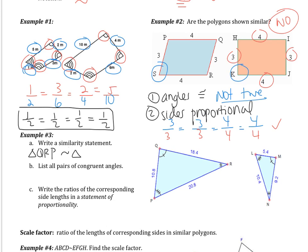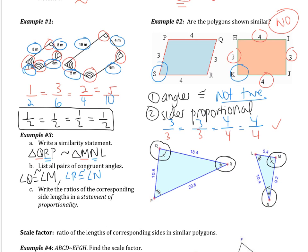The second triangle is very important. If I start with angle Q, that has one tick mark, so on the second figure that's going to go with angle M. Next I look at angle R — two tick marks — that's going to go with angle N, two tick marks. And then lastly is angle L. So the similarity statement is triangle QRP similar to triangle MNL. Because these triangles are similar, all of the angles are congruent. Angle Q is congruent to angle M, angle R is congruent to angle N, and angle P is congruent to angle L.